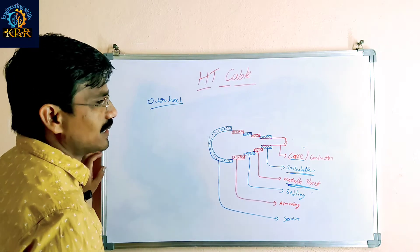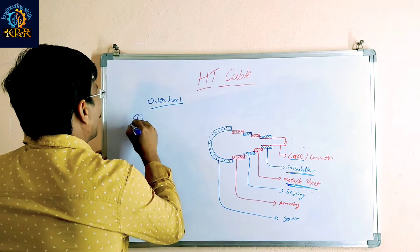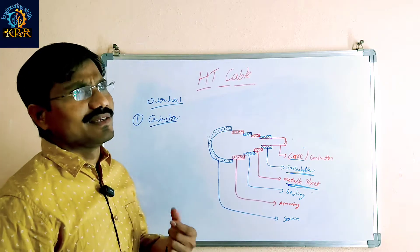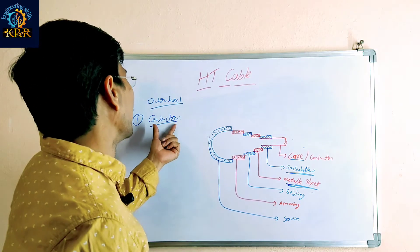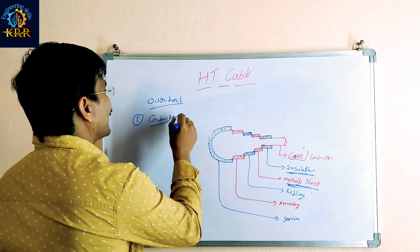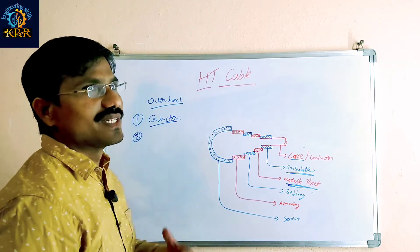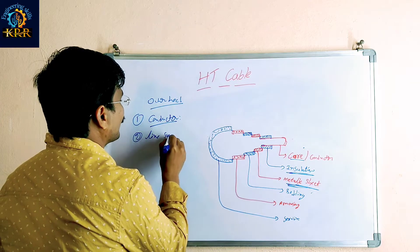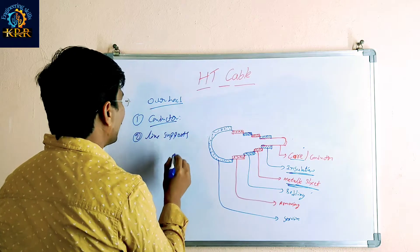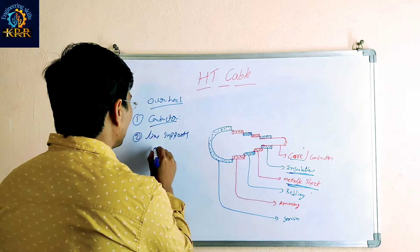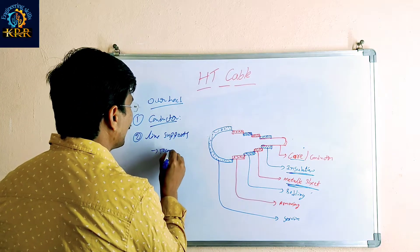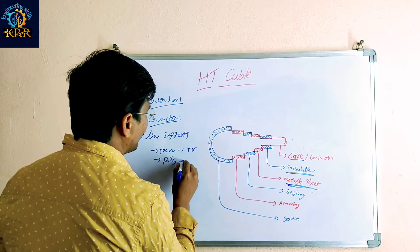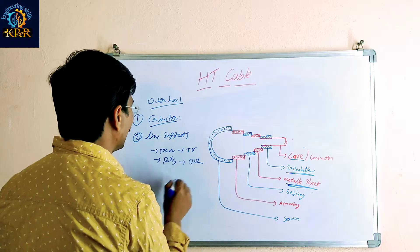If you go for the overhead transmission line, the first component we are using is a conductor — for current carrying purposes we are using conductors. The second one is the line supporters. In this line supporters, we have towers and poles. Towers are used at the transmission level; poles are used at the distribution level.